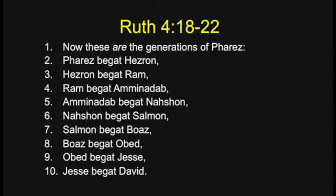From Ruth chapter 4, verse 18 to the end of the book, you have: 'These are the generations of Perez. He begot Hezron, Hezron begot Ram, Ram begot Abinadab, Abinadab begot Nashon, Nashon begot Solomon, Solomon begot Boaz, Boaz begot Obed, Obed begot Jesse, and Jesse begot David.' How many generations? Ten.